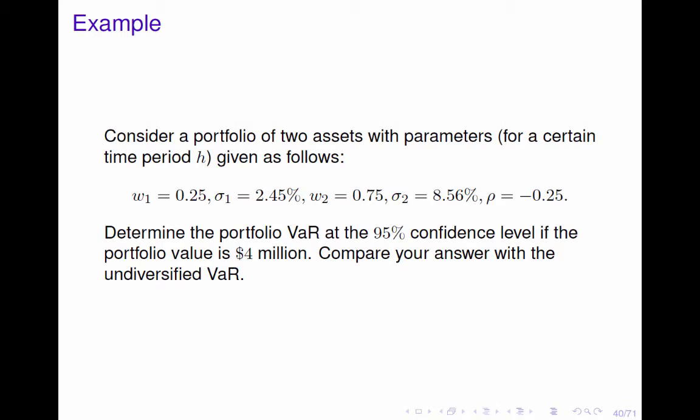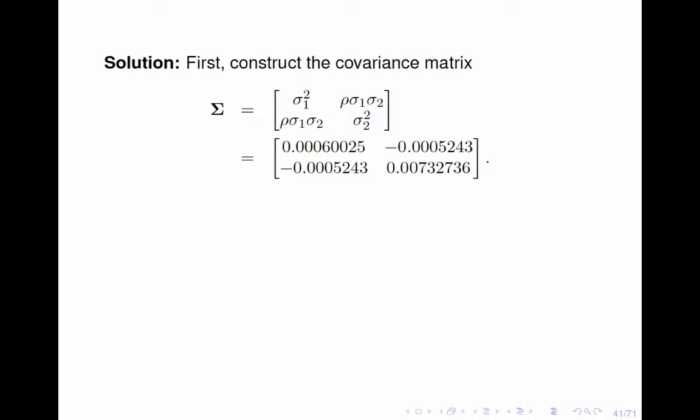Now let's take a look at the following example. Consider a portfolio of two assets with parameters for a certain time period h given as follows. Can you determine the portfolio VAR at the 95% confidence level if the portfolio value is $4 million? Compare your answer with the undiversified VAR.